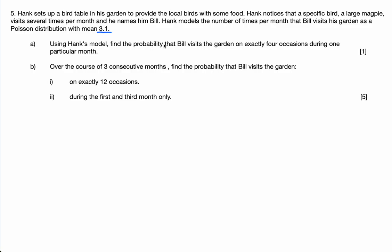Using Hank's model, find the probability that Bill visits the garden on exactly four occasions during one particular month. Okay, per month, that's another important thing. So let's say that X is a Poisson distribution with a mean of 3.1. What is the probability that X equals 4? That's the question.